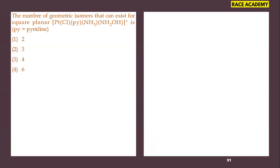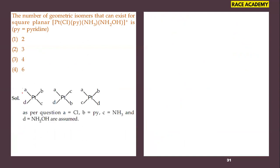The number of geometric isomers that can exist for the square planar complex [Pt(Cl)(Py)(NH₃)(NH₂OH)]⁺, where Py is pyridine. Writing this as ABCD — four different types of ligands. As per the generalization for square planar complexes with four different ligands, three geometric isomers are possible. So the second option — three — is the answer.